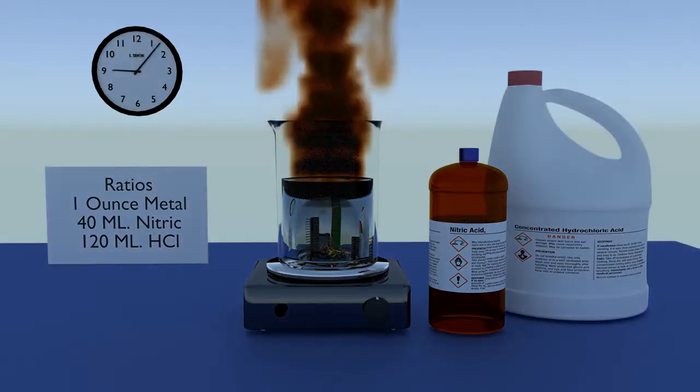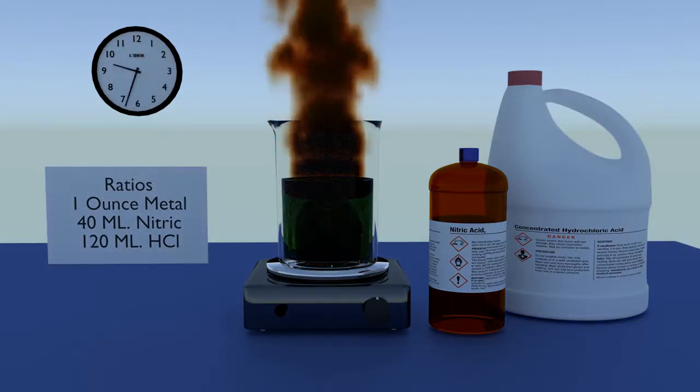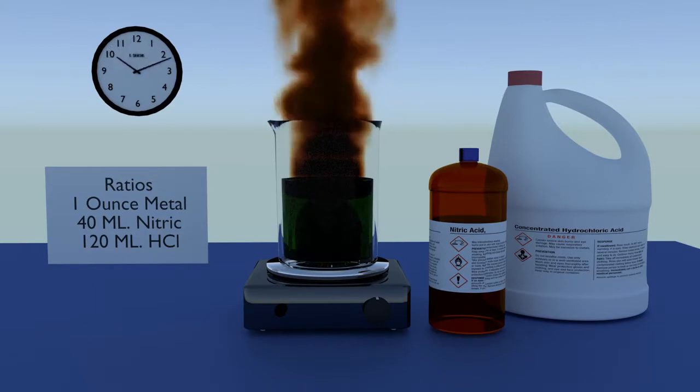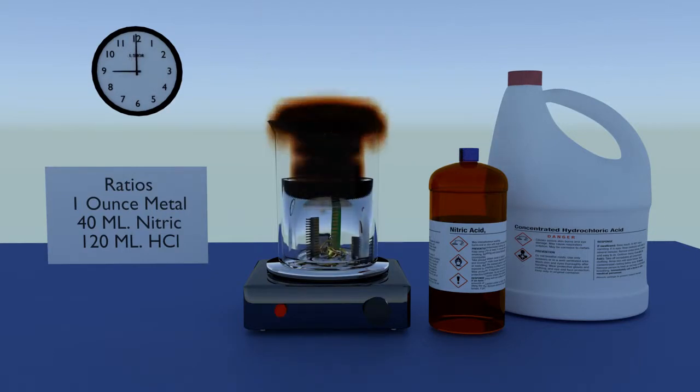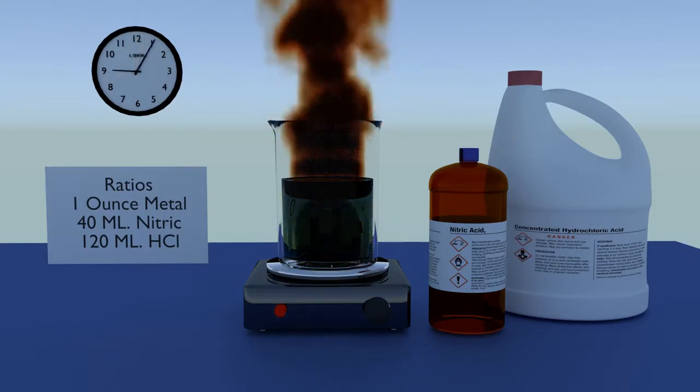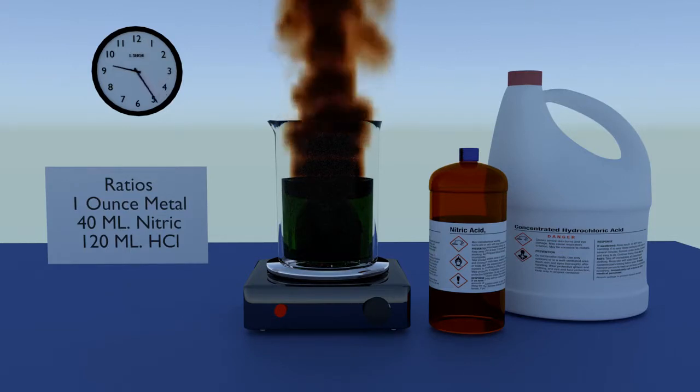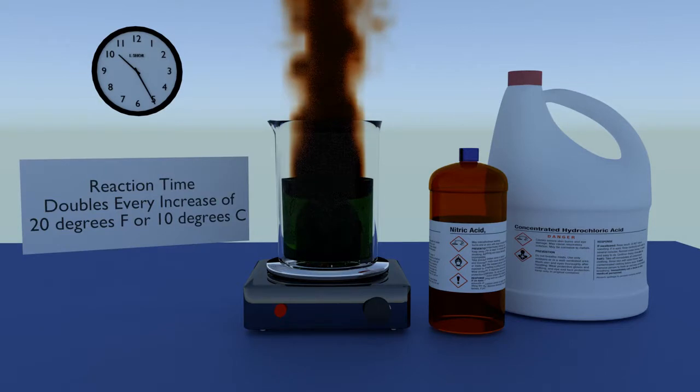Dissolving time at room temperature is usually about one to two hours. Heating the solution will speed the reaction time significantly but will also increase the fume production. For every increase of 20 degrees Fahrenheit or 10 degrees centigrade, the speed of the reaction will double.